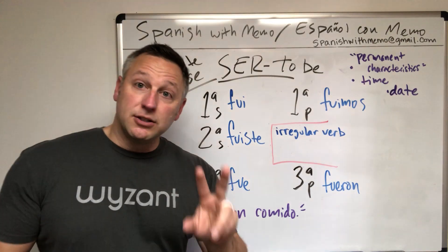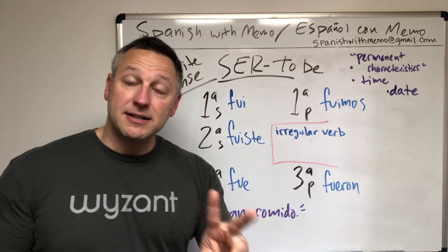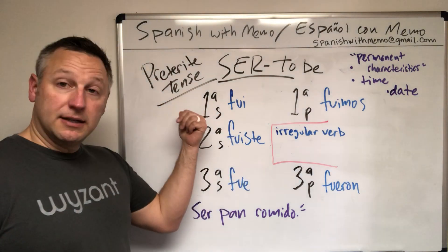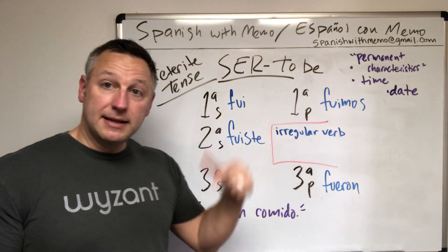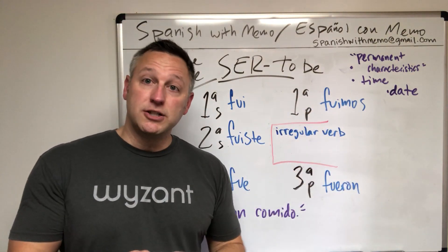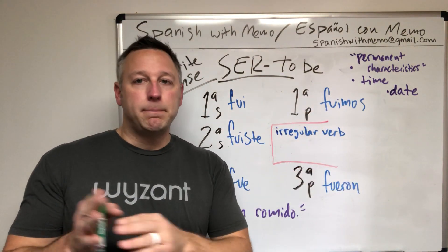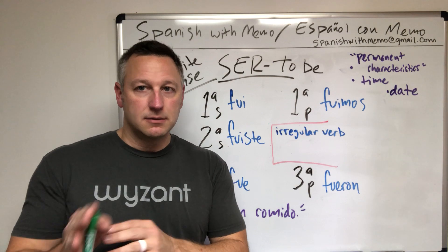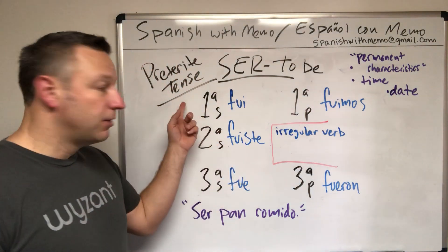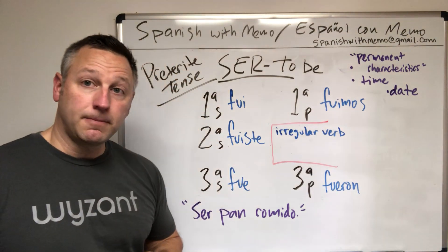Remember, in Spanish there are two types of past tenses: the preterite tense and the imperfect tense, both of which are past tense. Today, let's just focus on the preterite tense.